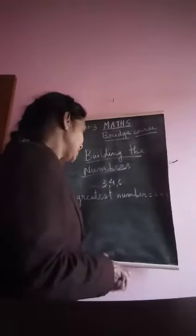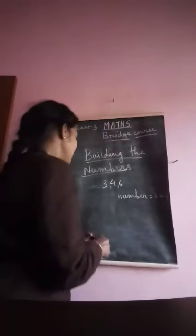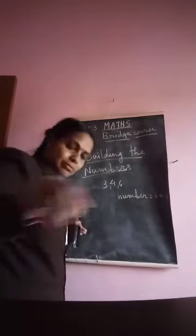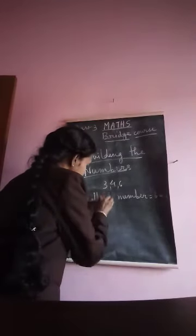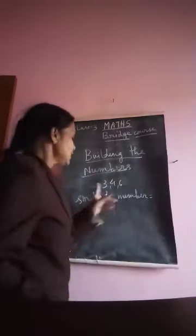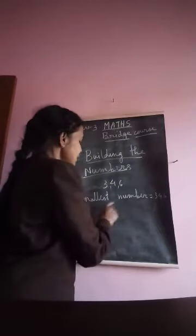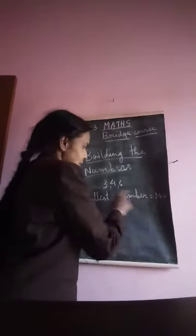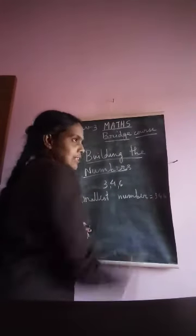Now, how to build the smallest number? Using the same digits, you write them in increasing order — ascending order. First write the smallest digit, which is 3, then 4, then 6. So 346 is the smallest number we can make using digits 3, 4, and 6.